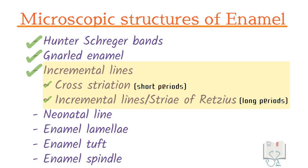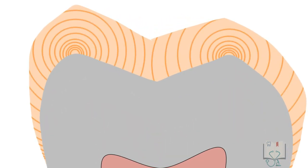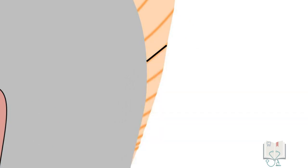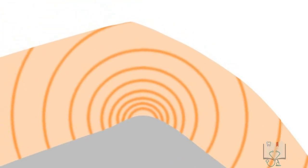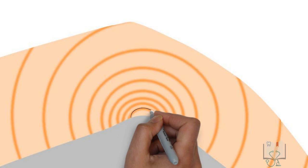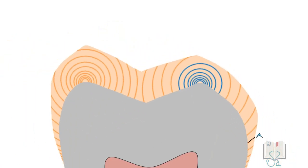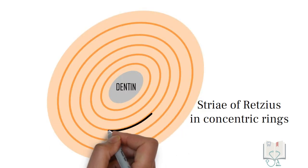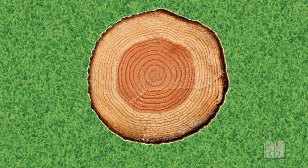Incremental lines of Retzius: when enamel is viewed longitudinally, they appear as brownish bands. In the cervical half, they appear running obliquely from the dentino-enamel junction to the enamel surface in a coronal direction. However, in cuspal areas, they appear to surround the tip of the dentine, and few striae do not reach the enamel surface. When enamel is viewed in a transversely cut section, these striae are seen forming concentric circles, just like the growth rings in the cross-section of a tree.